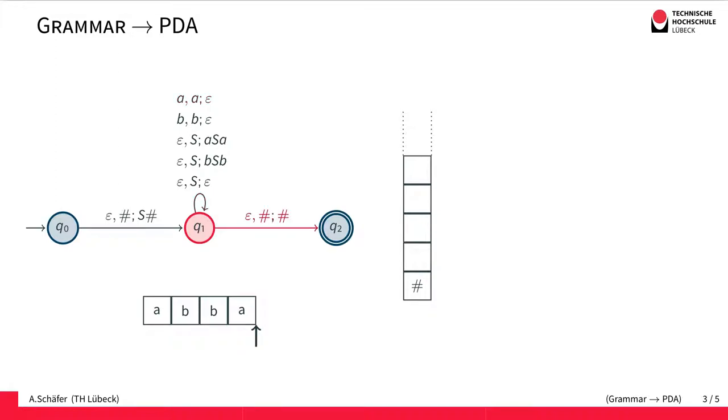And now all the symbols are gone from the stack. We find our bottom marker again and we have matched the whole input. So we simply move to the accepting state and accept the word.